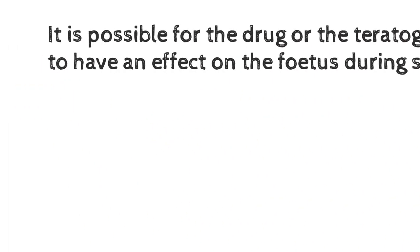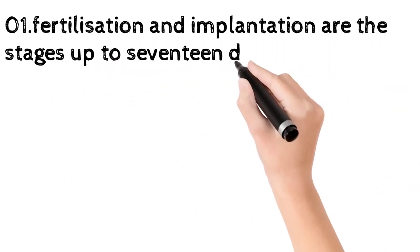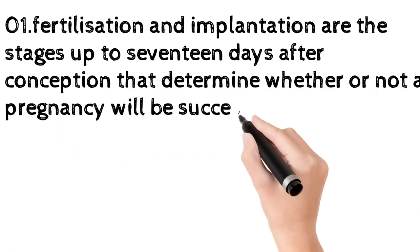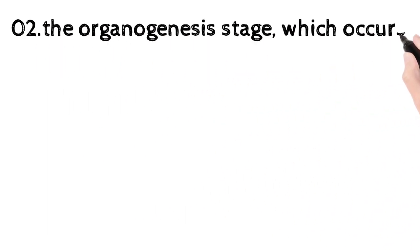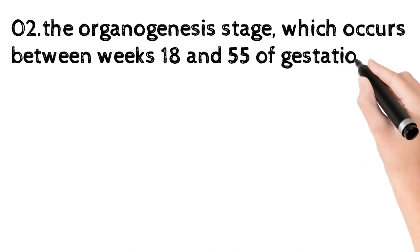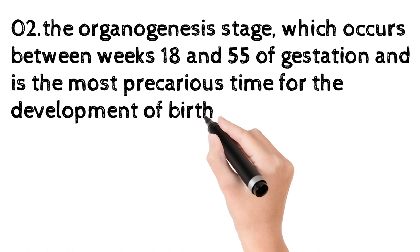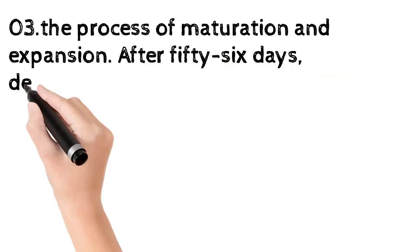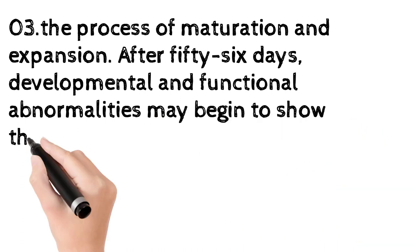It is possible for the drug or the teratogen to have an effect on the foetus during stage 3. Stage 1 covers fertilization and implantation, up to 17 days after conception, and determines whether or not a pregnancy will be successful. Stage 2 is the organogenesis stage, which occurs between weeks 18 and 55 of gestation, and is the most precarious time for the development of birth defects. Stage 3 is the process of maturation and expansion; after 56 days, developmental and functional abnormalities may begin to show themselves.